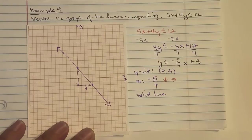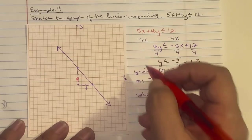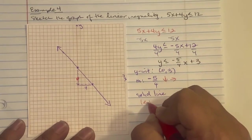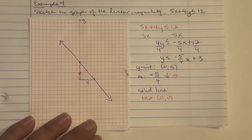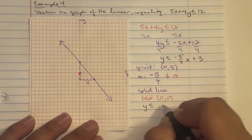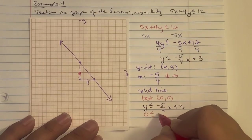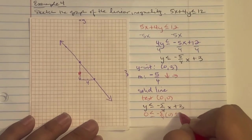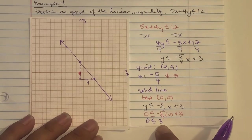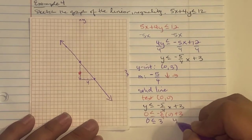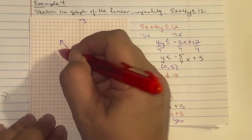We did not go through the origin — the origin is right in the middle, below the line. So we test (0, 0): Y less than or equal to negative 5/4 times X plus 3 — plugging in 0 — is 0 smaller than or equal to 3? Yes, 0 is smaller than 3, that's a true statement. Since (0, 0) is below the line and it made a true statement, we shade down — below the line.